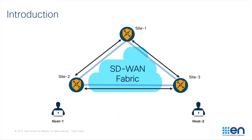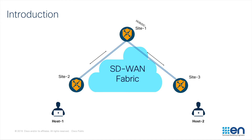For large-scale deployments, having a full mesh design will increase complexity in the network. So the preferred method would be to break down the network into either a centralized or a regional hub-and-spoke design.